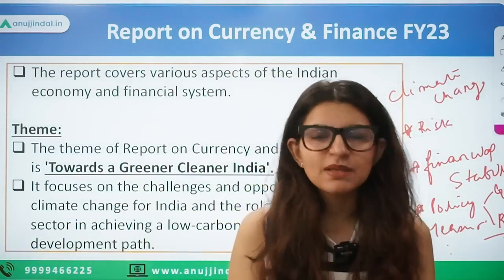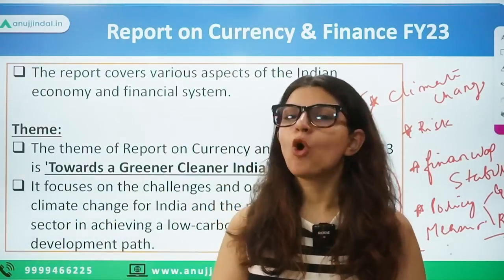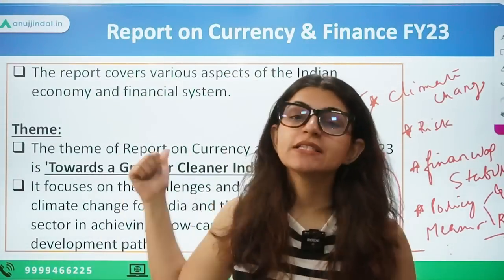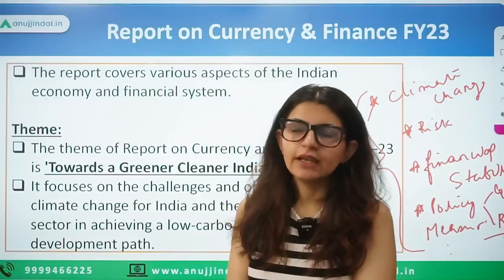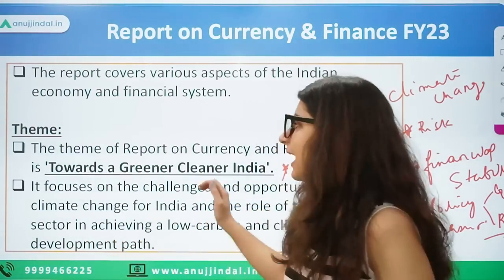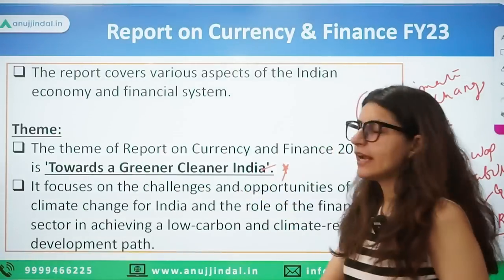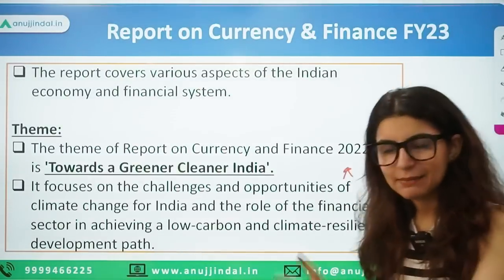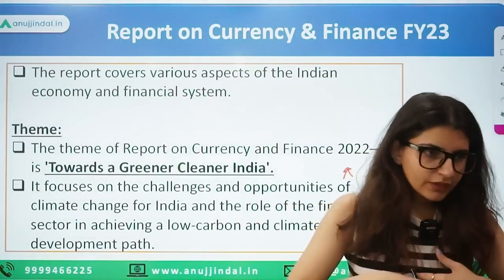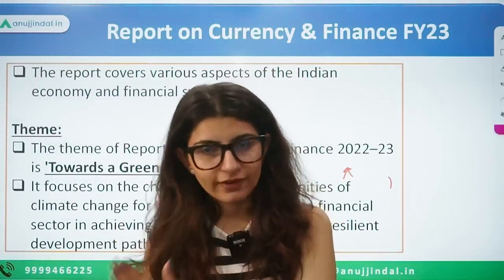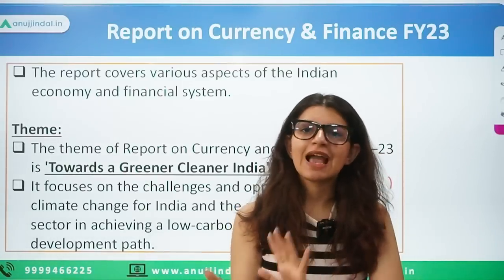The report first clarifies that the views expressed are not the views of the RBI — they are the views of the contributors and experts who contributed to the report. For example, calculations about the GDP impact of climate change are done by the contributors, not the RBI. The theme is 'Towards a Greener, Cleaner India,' and the focus is on challenges and opportunities of climate change — what steps India is already taking to mitigate climate change risk, and what measures will be required in the future.